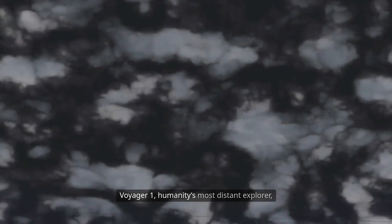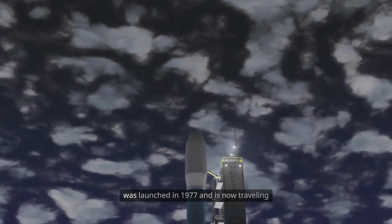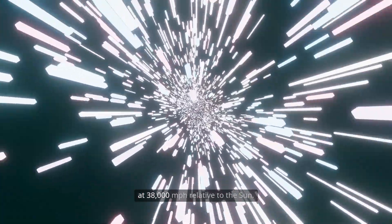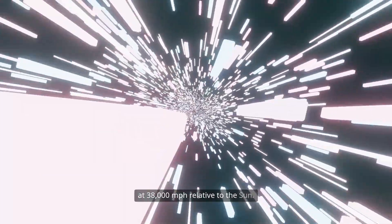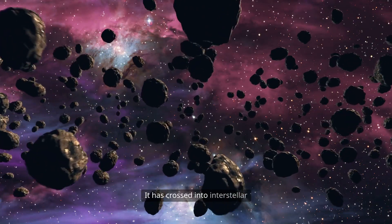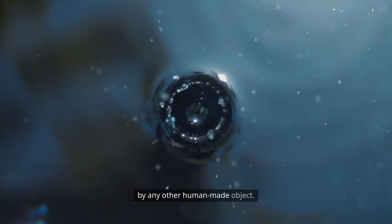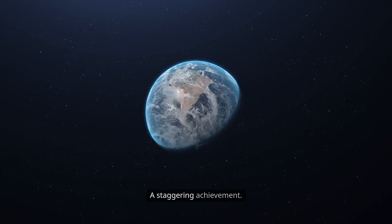Voyager 1, humanity's most distant explorer, was launched in 1977 and is now traveling at 38,000 miles per hour relative to the sun. It has crossed into interstellar space, a boundary never reached by any other human-made object. A staggering achievement.